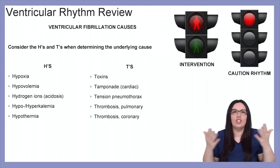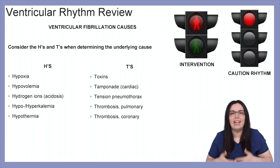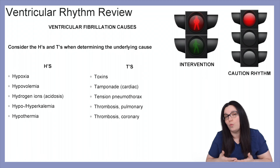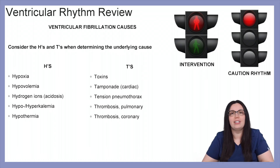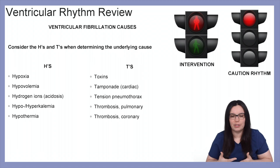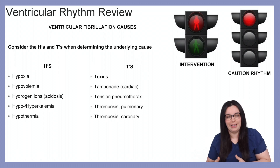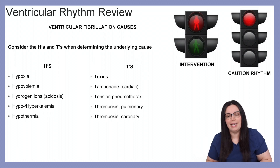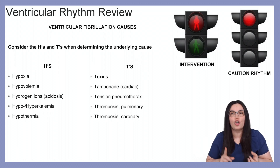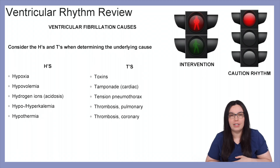When considering the causes of ventricular fibrillation, we have to consider our H's and our T's to determine the underlying cause so that we can treat it. Our H's consist of hypoxia, hypovolemia, hydrogen ions — meaning an increase in acidosis — hypo- and hyperkalemia, and hypothermia. When it comes to our T's, we're looking at toxins, cardiac tamponade, tension pneumothorax, or thrombosis from either pulmonary or coronary descent.